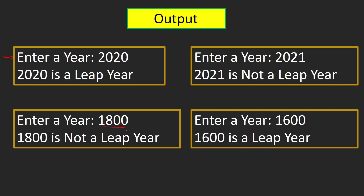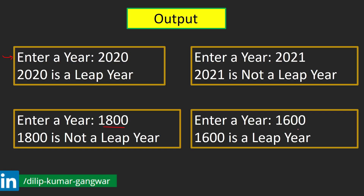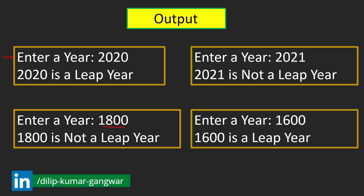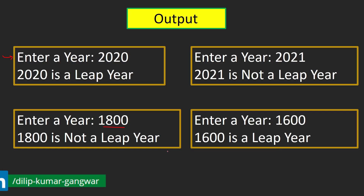You may be thinking that any year completely divisible by 4 is a leap year, but here 1800 is also divisible by 4 and 1600 is also divisible by 4 — yet 1800 is not a leap year and 1600 is a leap year. So what are the actual conditions for detecting a year as a leap year? Let's see all those conditions.